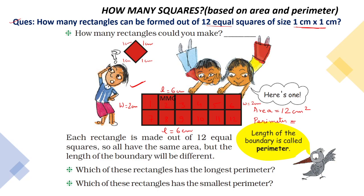Now we have to find the perimeter. Perimeter means the sum of the length of the boundary of a shape. So 6 plus 6 is 12, plus 2 is 14, plus 2 is 16. So your answer is 16 cm.